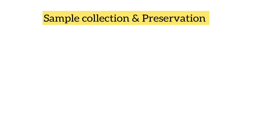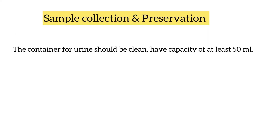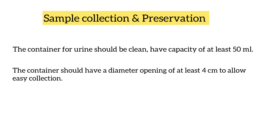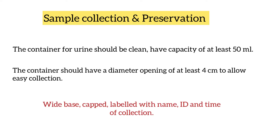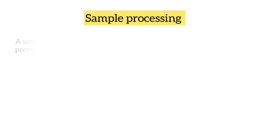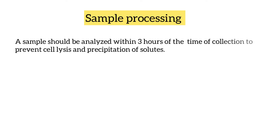The container for urine should be clean and should have a capacity of at least 30–50 ml. The container should have a diameter of the opening of at least 4 cm to allow easy collection. It should have a wide base, should be capped, and labelled with name, ID and time of collection. A sample should be analyzed within 3 hours of the time of collection to prevent cell lysis and precipitation of solutes.